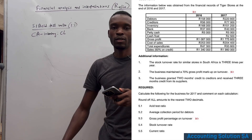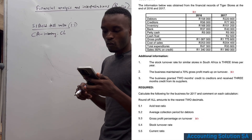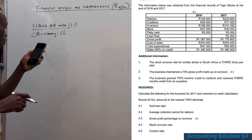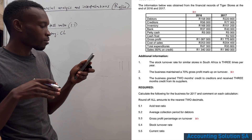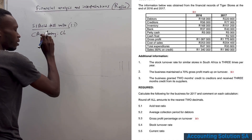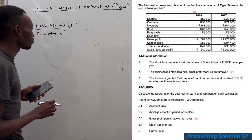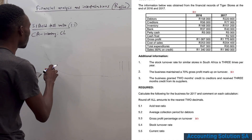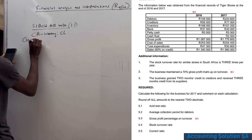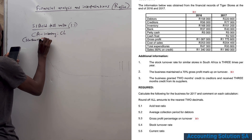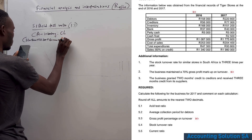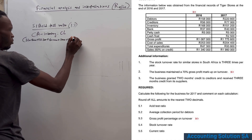Looking at the table, our current assets include debtors, inventory, bank, petty cash, and cash. We add all of them — 220,800 + 151,200 + 40,000 + 5,000 + 2,500 — giving a total of 419,500. Then we subtract inventory.